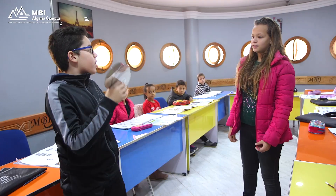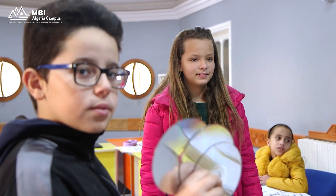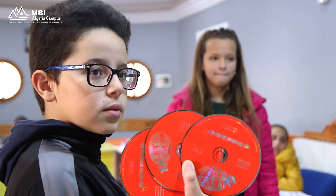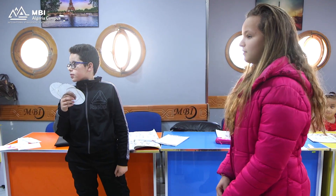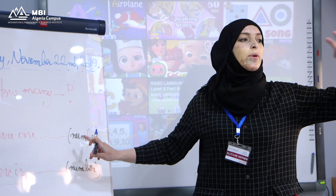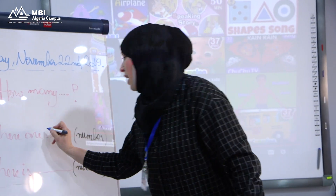It's a marker. It's one marker. What's the color? They are red. Red. How many? Write here the number. We have three. Three.